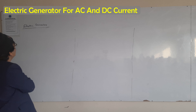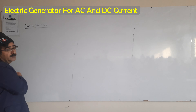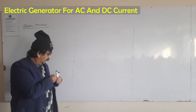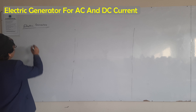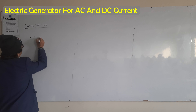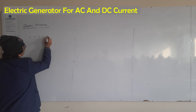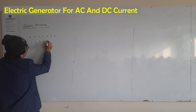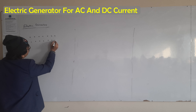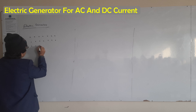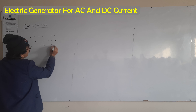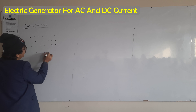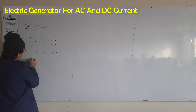Our next topic is electric generator. So if there is a permanent magnetic field — the cross symbol represents the field going into the page, as I have already explained.